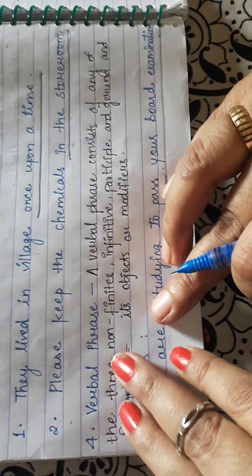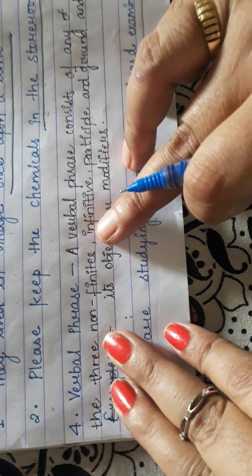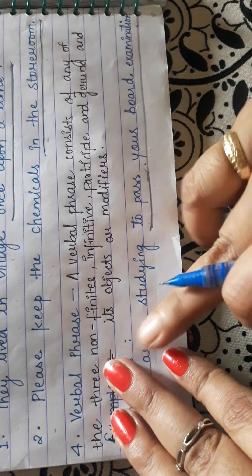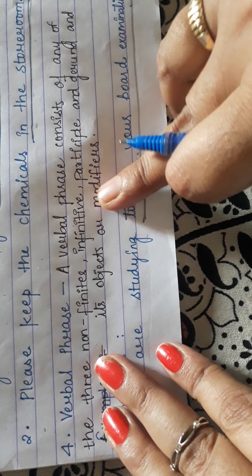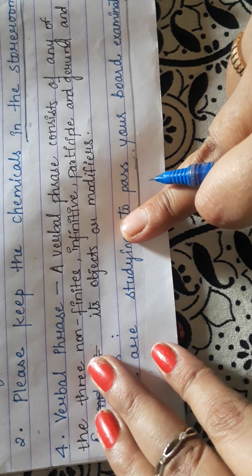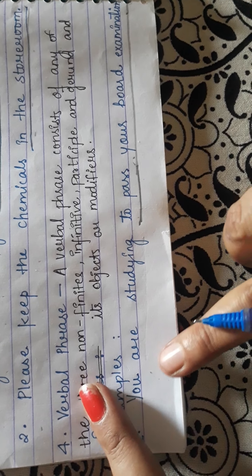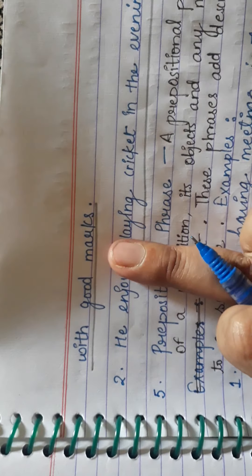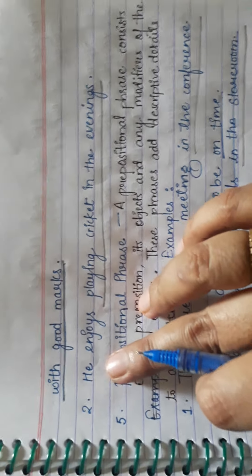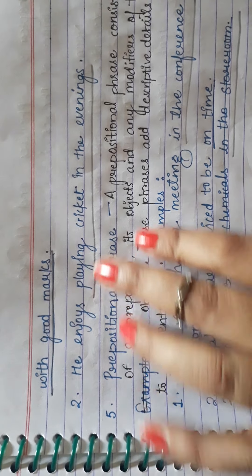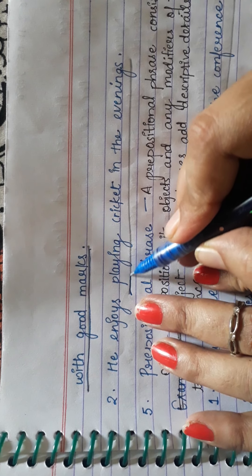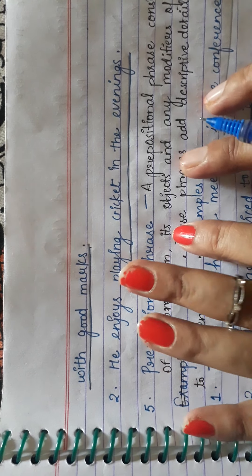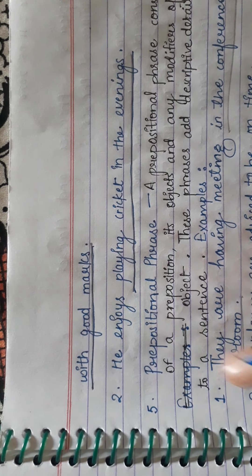Now, verbal phrase. A verbal phrase consists of any of the three non-finites — infinitive, participle, and gerund — and its objects or modifiers. Example: 'You are studying to pass your board examination with good marks.' Here, 'to pass your board examination with good marks' is a verbal phrase. Second example: 'He enjoys playing cricket in the evenings.' Here, 'playing cricket in the evenings' is a verbal phrase.